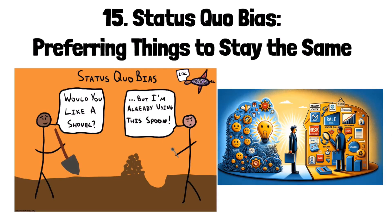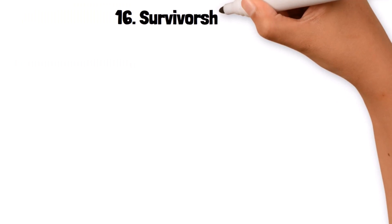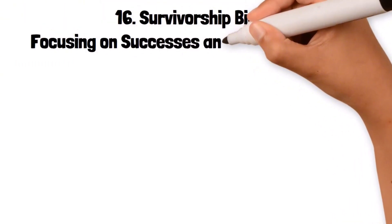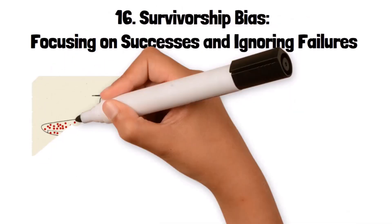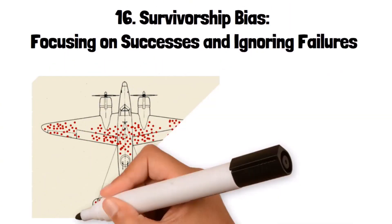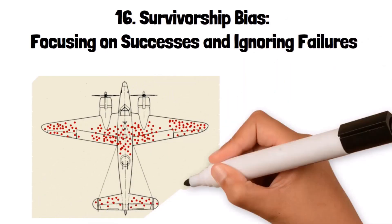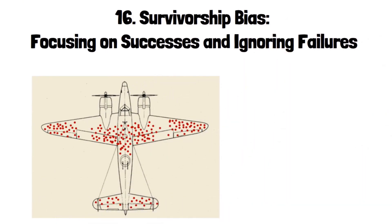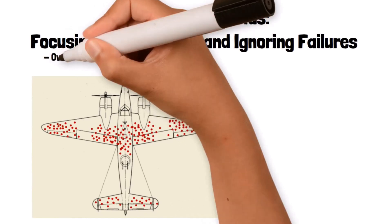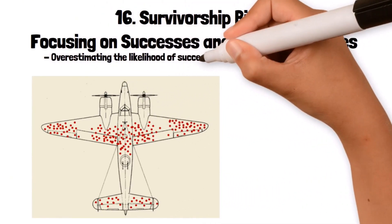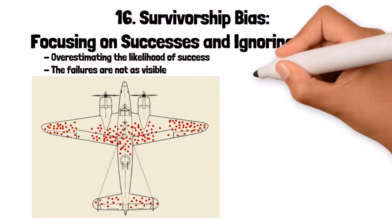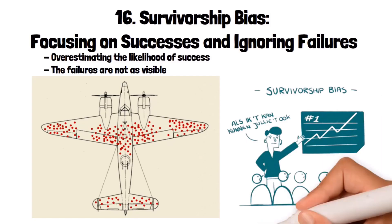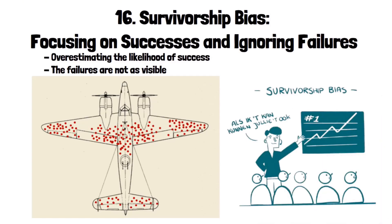16. Survivorship Bias: focusing on successes and ignoring failures. Survivorship bias occurs when people focus on the successes in a group and overlook the failures, leading to a skewed understanding of reality. This bias often leads to overestimating the likelihood of success because failures are not as visible. For example, studying only successful companies to determine what makes a business thrive can lead to incorrect conclusions because the analysis ignores companies that failed.